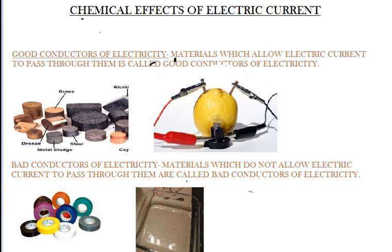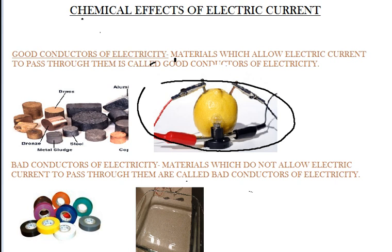All these metals are good conductors of electricity as they allow the flow of electricity through them. There is one very interesting conductor of electricity — it is the lemon. What makes the lemon a good conductor of electricity? This we will study in our next section.